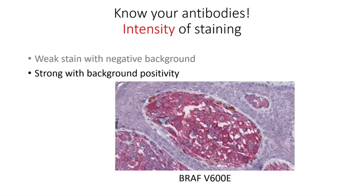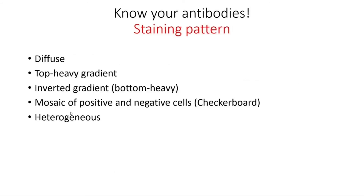For BRAF V600E, usually you will have some degree of background positivity, and you really expect your cells to be strongly positive in the cytoplasm to be retained as a positive stain. There are different types of patterns: you can have a diffuse positivity, a top-heavy gradient, or on the opposite an inverted bottom-heavy gradient. You can also have a mix of positive and negative cells, called a mosaic or checkerboard pattern, and lastly a heterogeneous pattern in the cells.